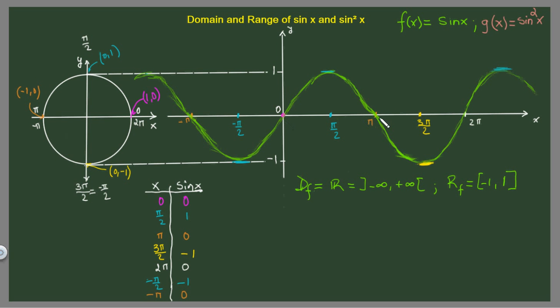Our function g of x could also be written like this: sine squared of x can also be written as sine in parenthesis to the power of 2. This represents that we actually have two sine functions, sine of x times sine of x.